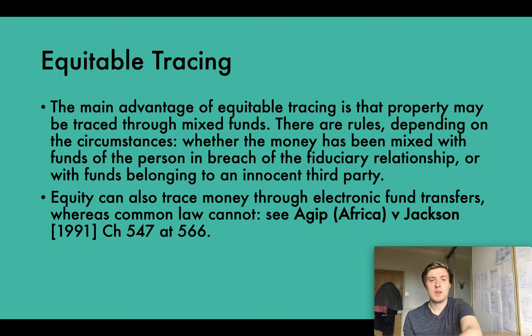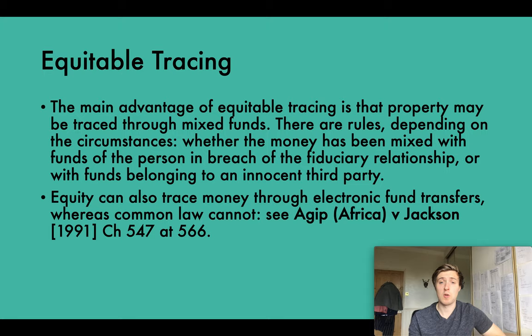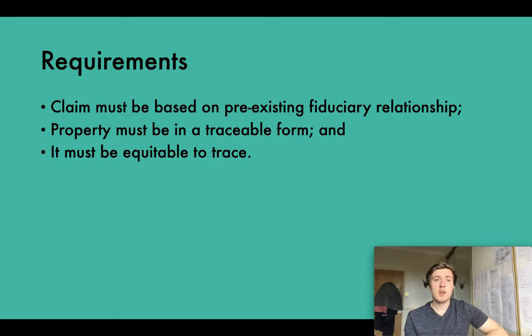The main advantage of equitable tracing is that property may be traced through mixed funds. There are rules depending on the circumstances, whether the money has been mixed with funds of the person in breach of the fiduciary relationship or with funds belonging to an innocent third party. Equity can also trace money through electronic fund transfers whereas common law cannot, as seen in the case of Agip v Jackson from the previous video.